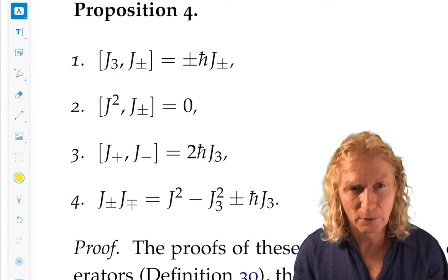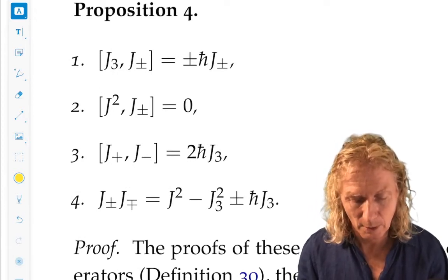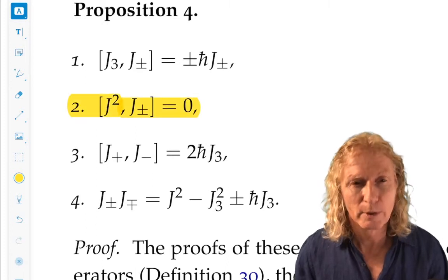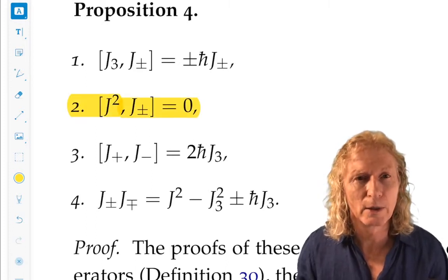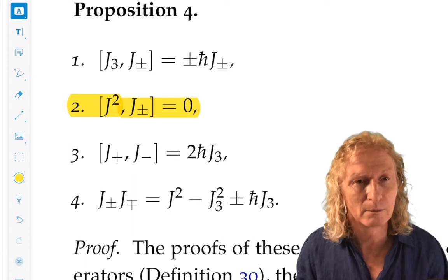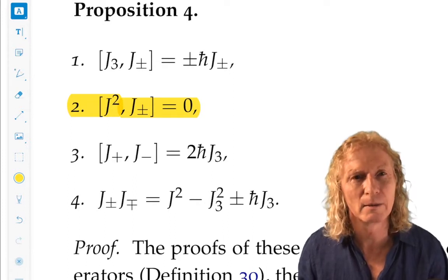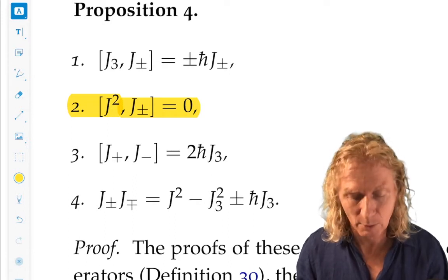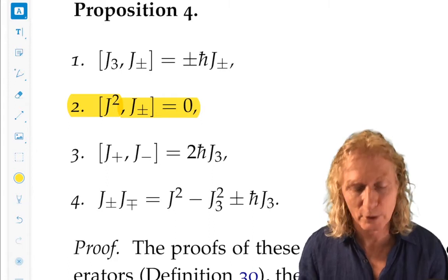These should make sense if you stare at them enough. First of all, it should be clear that j-squared commutes with j-plus and j-minus. If it's not clear, think about it. Look at the definition and what you know about j-squared commuting with the different components of j.